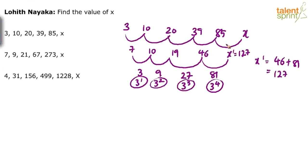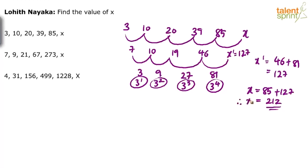Now we can find x. x is nothing but 85 plus x_dash, so 85 + 127 = 212. Therefore x = 212. Options are not shown here, but x comes out to be 212.